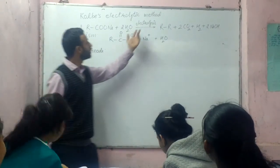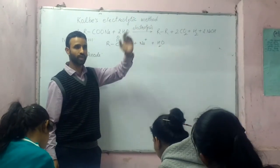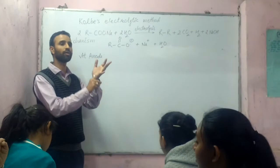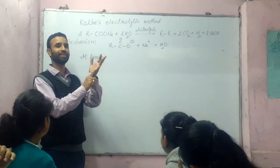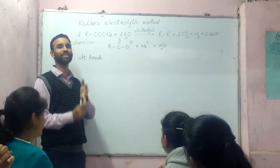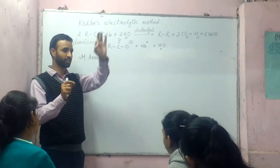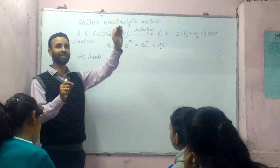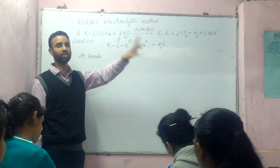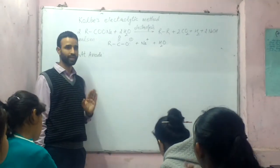Now, if we do electrolysis, what type of reaction takes place? It is a free radical reaction. High temperature, electricity, light, peroxide, or electrolysis — if any of these are present, then a free radical reaction takes place.